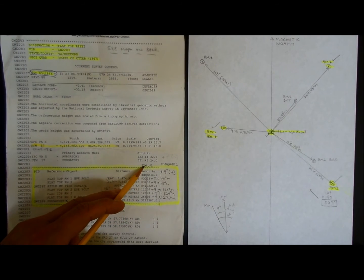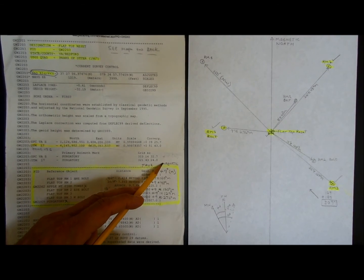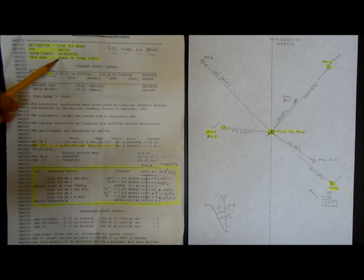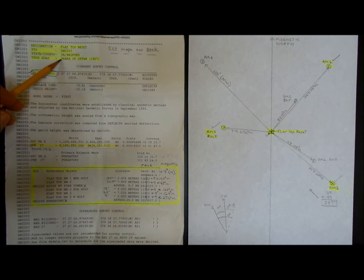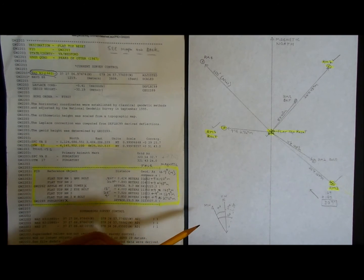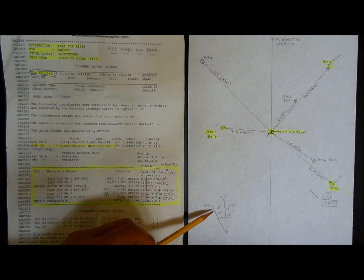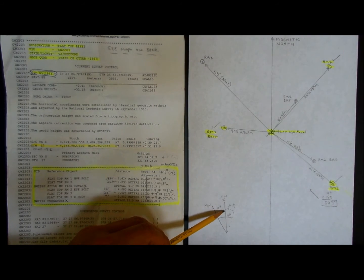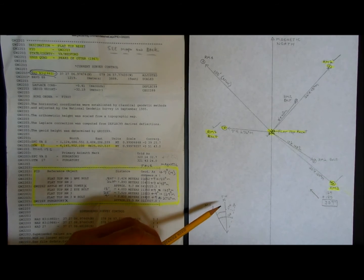That's the true bearing, but when you're in the field, you'll be using a compass, so you need the magnetic bearing. If you consult this Peaks of Otter quadrangle map, you'll find out that there's 9 degrees of western declination. Between true north and magnetic north, there's 9 degrees from here to here.